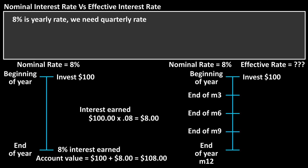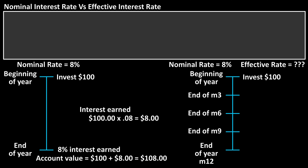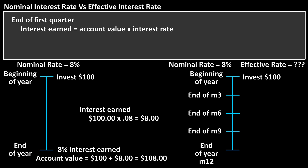To get the quarterly rate, we divide the yearly rate of 8% by 4, which is 2% or 0.02. And this is the value we'll use at the end of each of the 4 compounding periods to calculate the interest earned. So to calculate the interest earned at the end of the first quarter, we have $100 times 0.02, which equals $2.